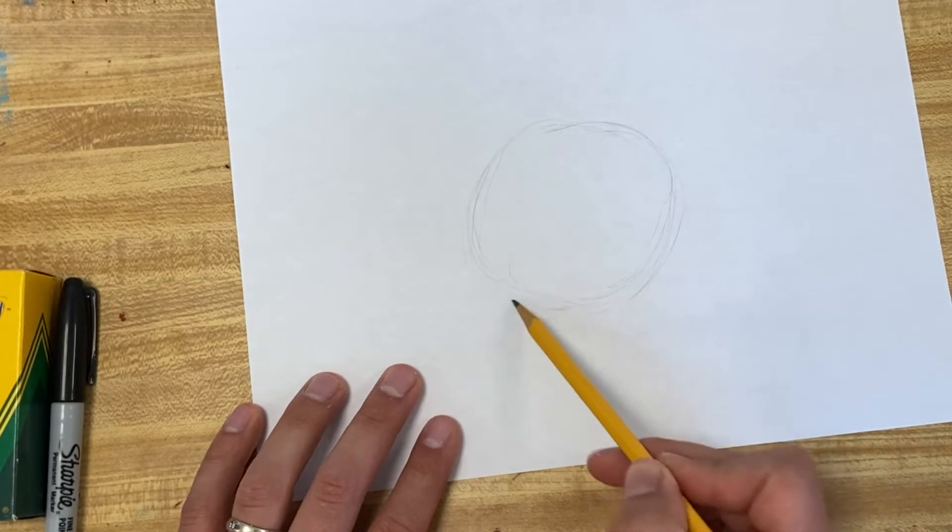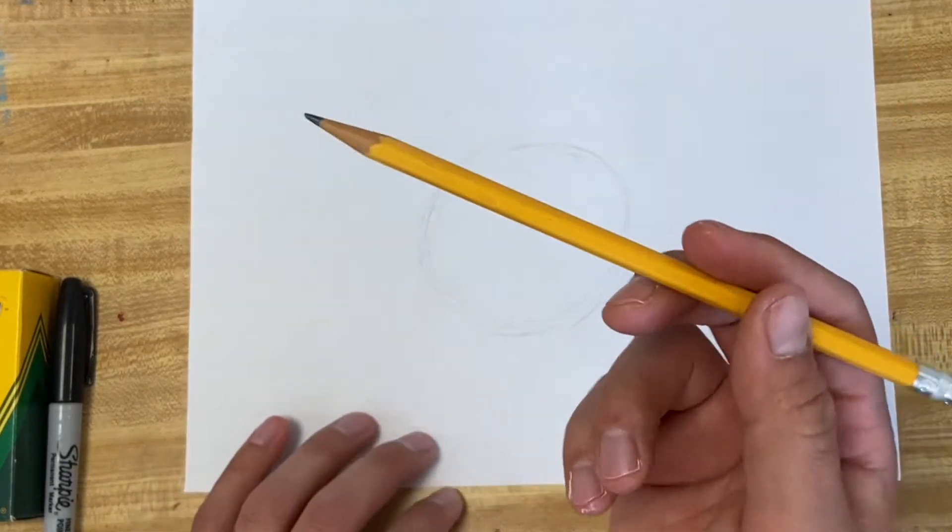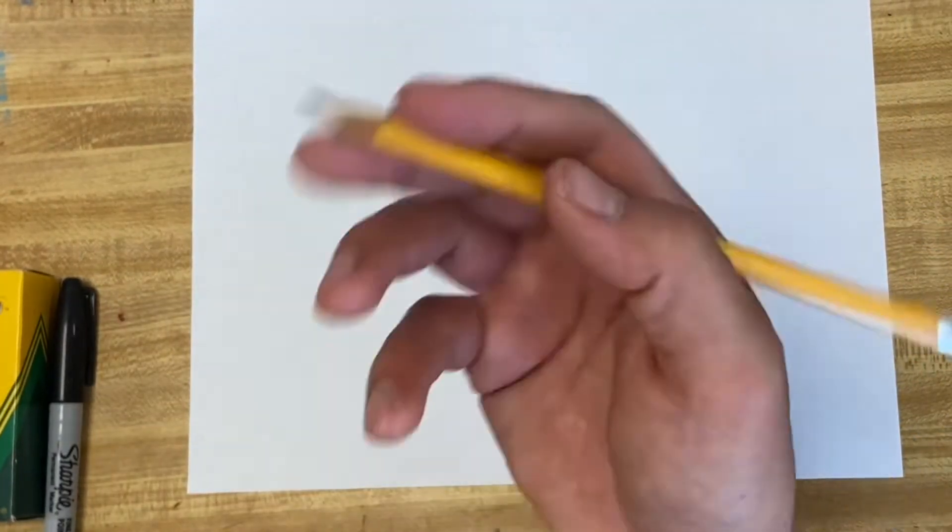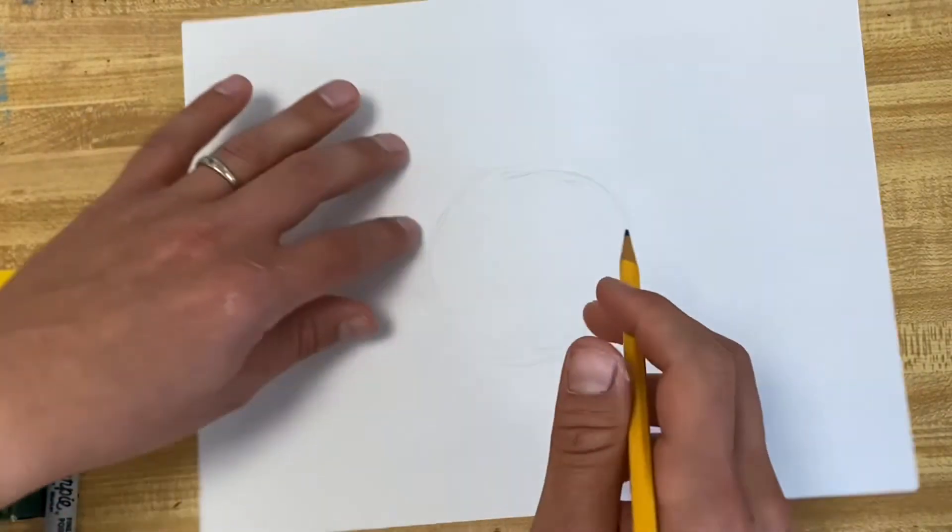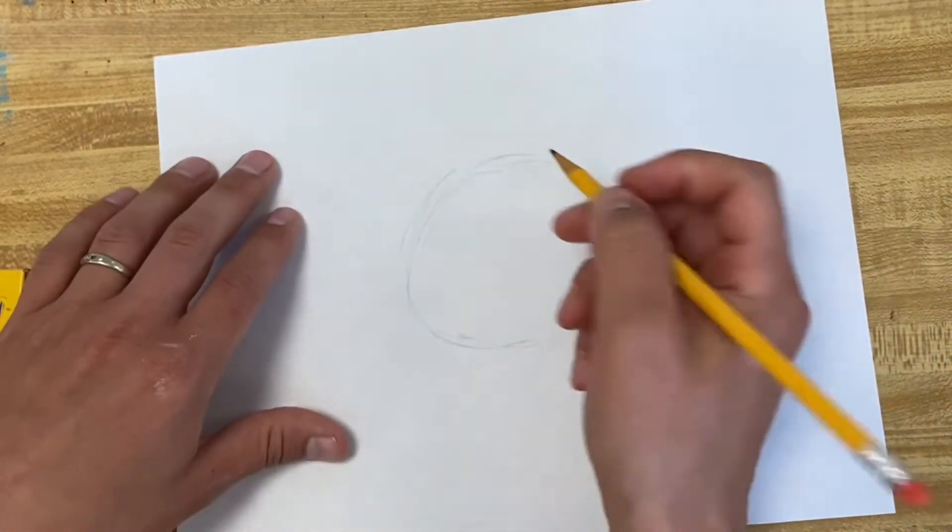Once I get an idea for that, I can go over it darker. I think this way works a little bit better just because my natural motion for right-handed is to go this way. It feels a little awkward going against this way. And then I got my circle, and I can go over it a little bit darker.